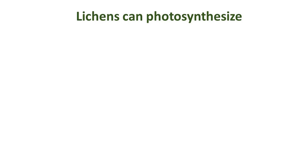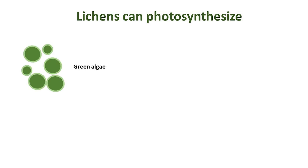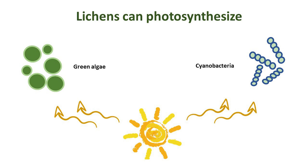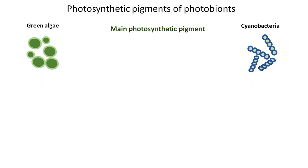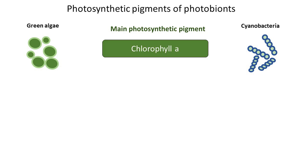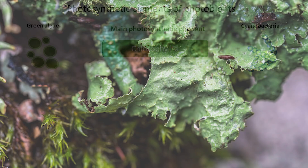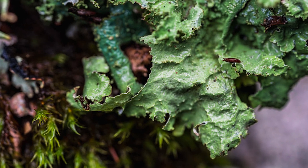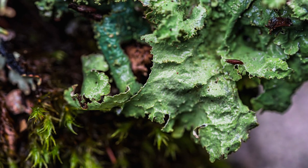First of all, lichens can photosynthesize. Their photosynthetic partners, whether green algae or cyanobacteria, can absorb sunlight and convert it into chemical energy to produce nutrients like sugars. The essential photo-harvesting green pigment is chlorophyll, with chlorophyll A being an indispensable photosynthetic pigment for both green algae and cyanobacteria. The green coloration of some lichens is primarily due to the presence of chlorophyll pigments within the photobiont.